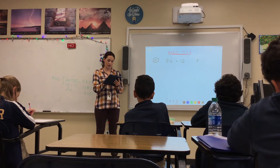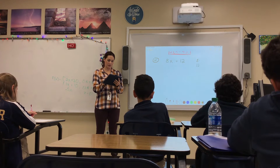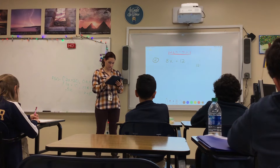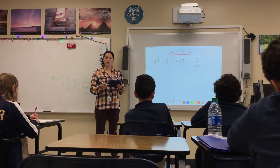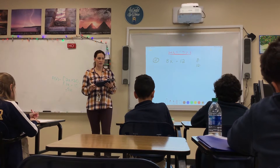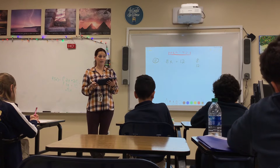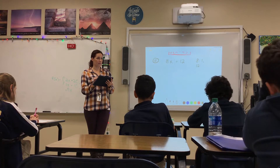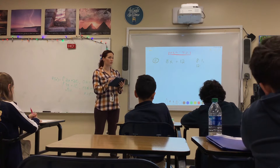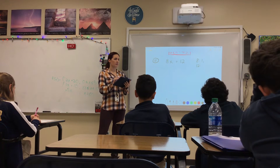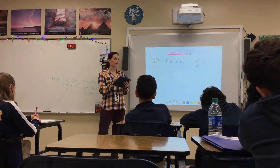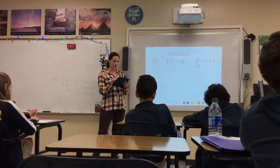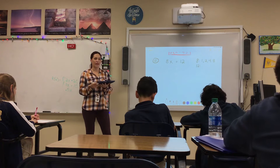We have to first find the GCF in order to factor it out. So I'm going to go over here and put 8 and 12. What are all the factors of 8? Ivan: 1, 2, 4, and 8. So 1, 2, 4, and 8 are the factors of 8.